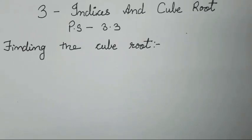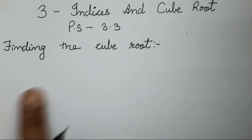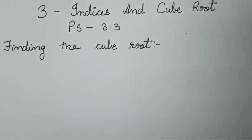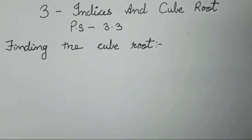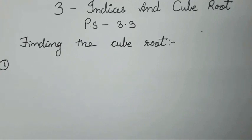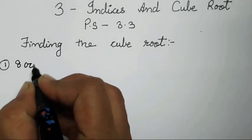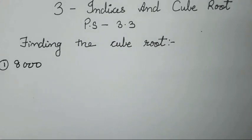Hello everyone, welcome back to my channel. Today we are going to study chapter number three: indices and cube root, practice set number 3.3. We are going to complete this in today's video. We have to find the cube root. Finding the cube root is very easy by the method of factorization. I will show you how to find the prime factors and then find your cube roots. The first question is 8000.